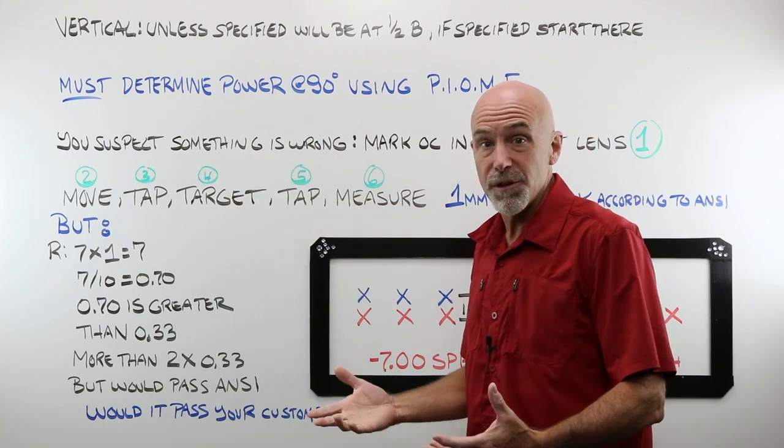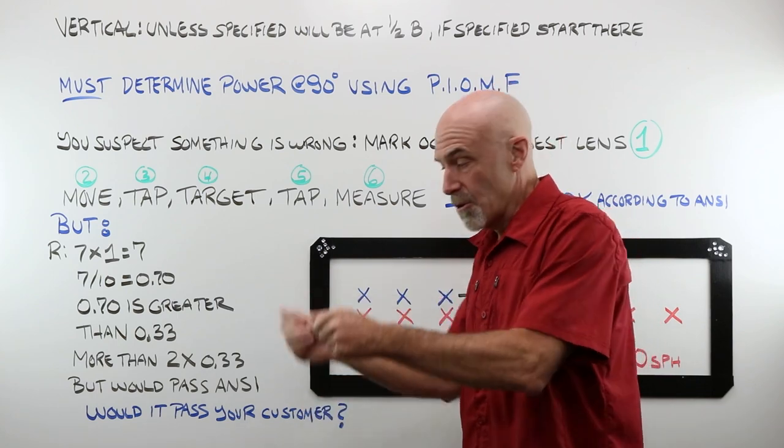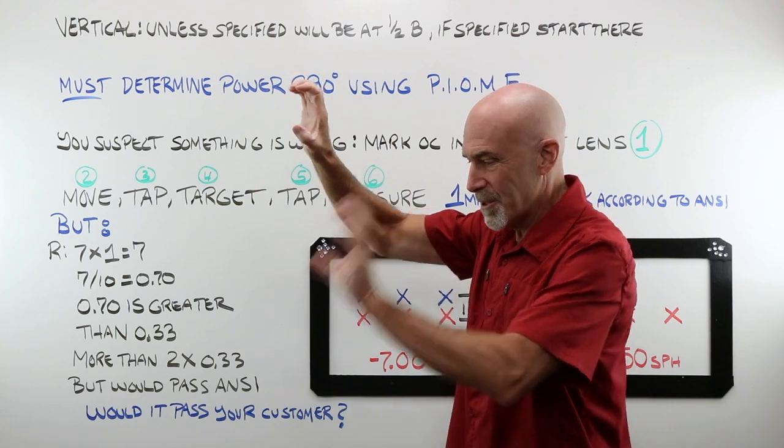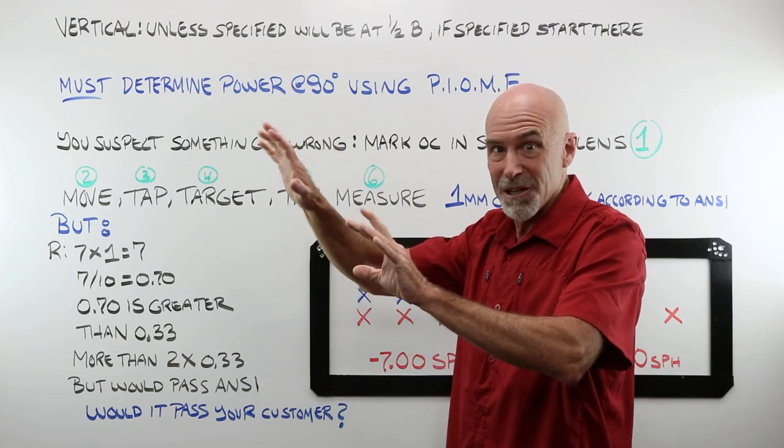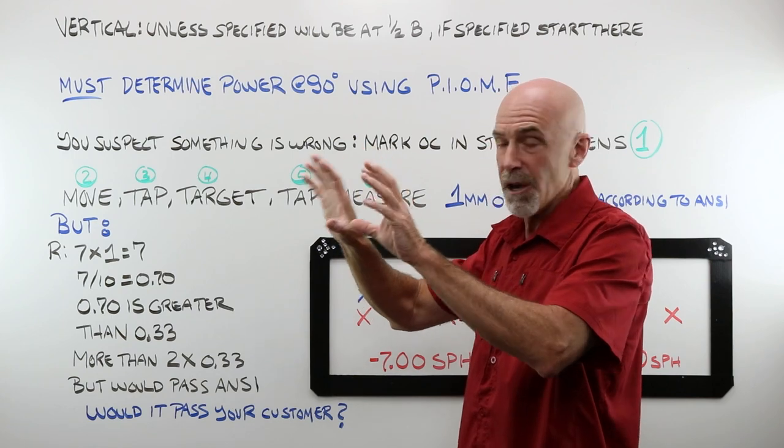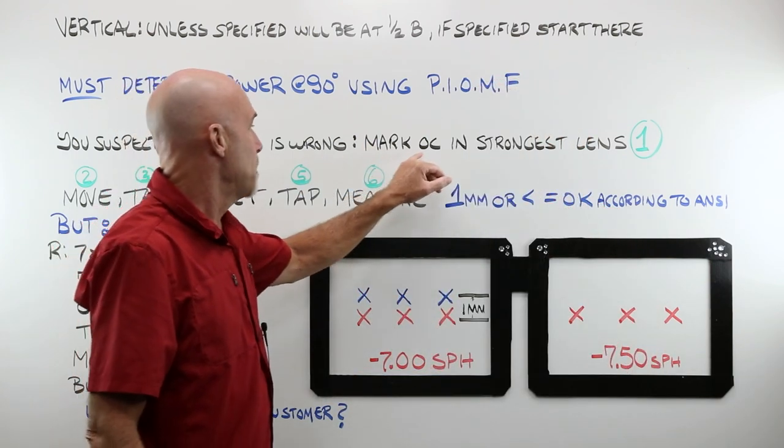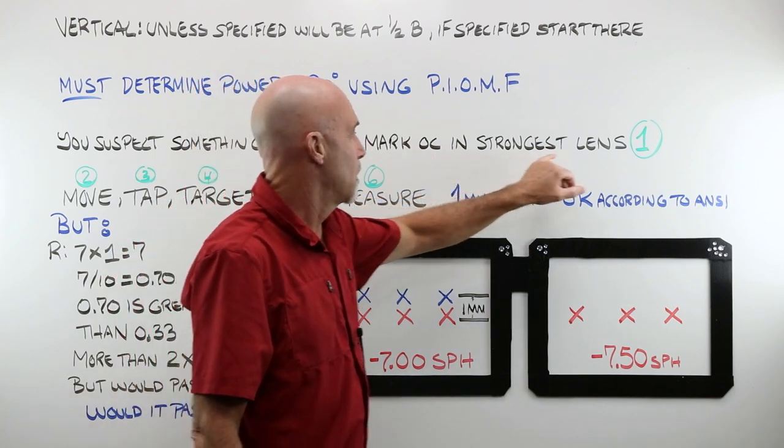You're doing your verification. You've got the glasses. You're going between the right and the left in the lens meter. One OC is up here. One's in here. It's like, something's wrong. Can we get away with this? Is this enough that it's going to matter? Well, let's find out.